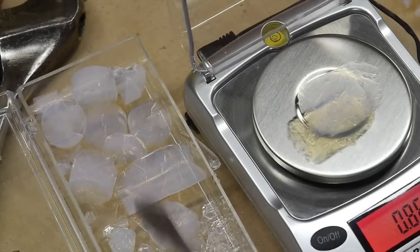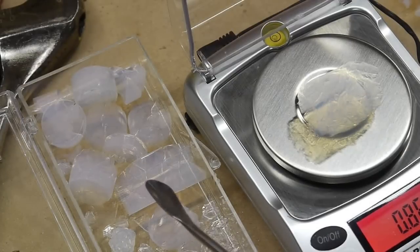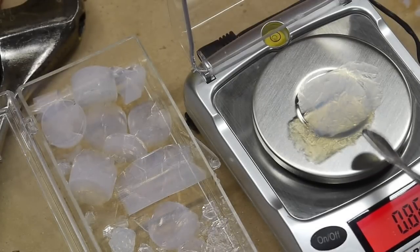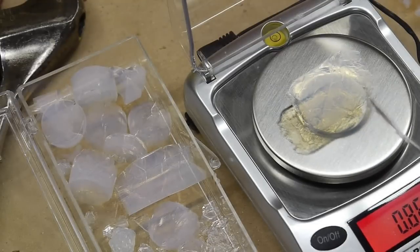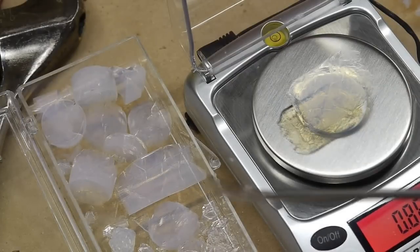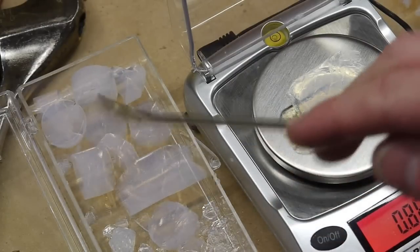So these aerogels here are the ones that I made with the supercritical CO2 method. And this is an aerogel that I just made today with the supercritical methanol method. And there's less shrinkage.